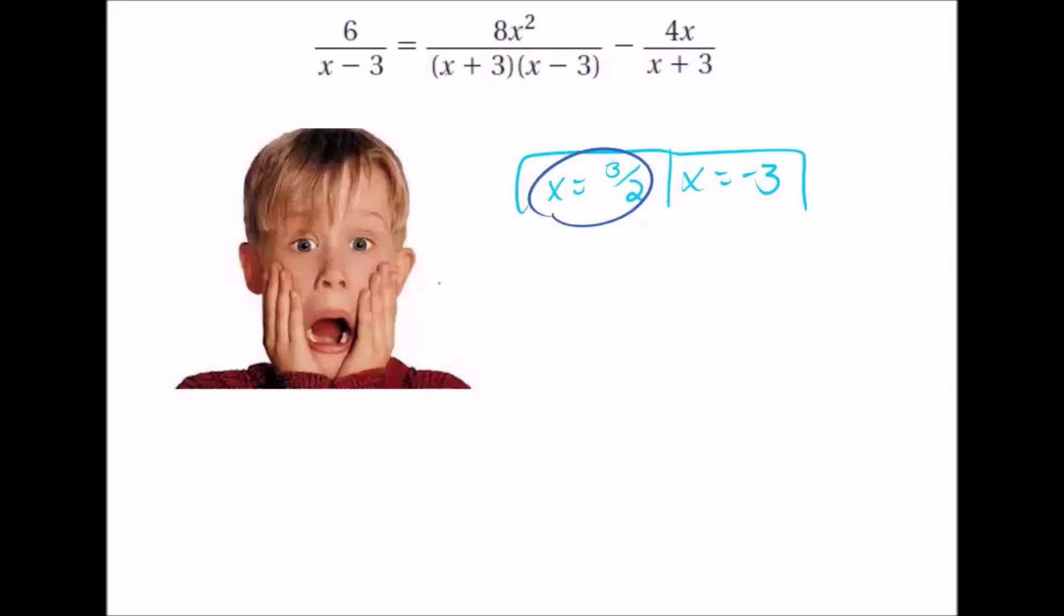Now we're going to plug in minus 3. Minus 3 minus 3 is minus 6, that's fine. Now minus 3 plus 3, that's going to become 0. And that gets multiplied by whatever this is. And this whole denominator is going to become 0. That's not going to work out. It's also going to become 0 right here when you plug it in. So that cannot be a good answer, because when it makes the denominator 0, you can't use it.